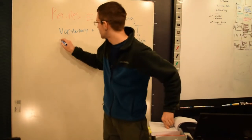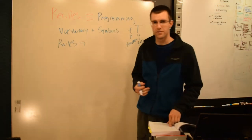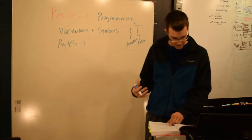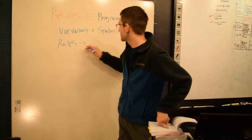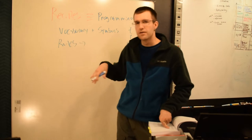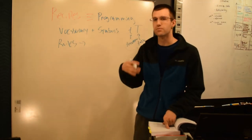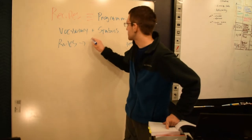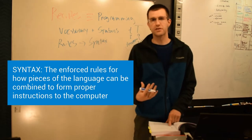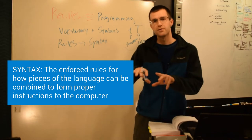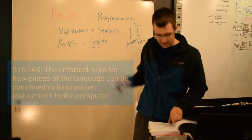Both recipes and programming involve this idea of vocabulary and then symbols that have defined meanings. We have rules for how we can use that vocabulary. Things that we can and we can't mix. Recipes have rules and programming has rules. The fancy word that we use in programming for the rules of writing a language is called syntax. What symbols can go where? How do the curly braces have to fit? This is known as syntax.